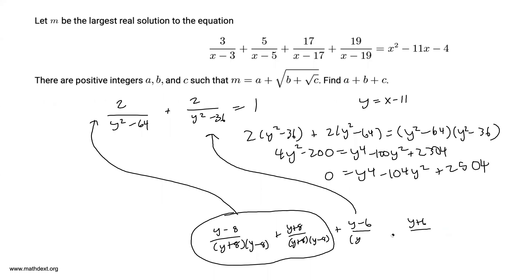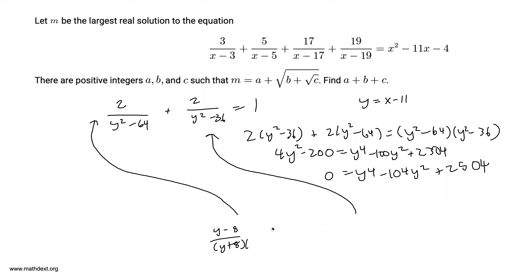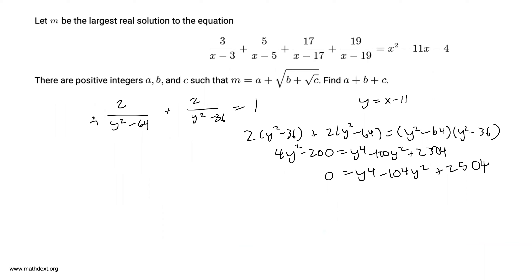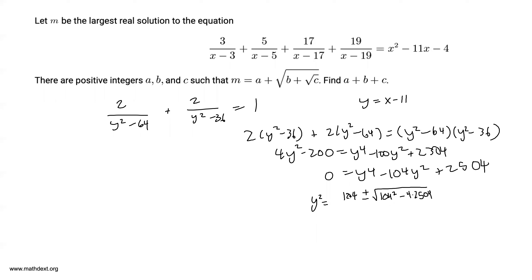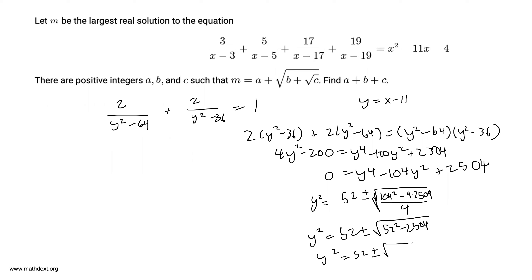Now we apply the quadratic formula since we have a quadratic in y². We get y² = [104 ± √(104² - 4·2504)] / 2. Simplifying: 104/2 = 52, and dividing the discriminant by 4 gives y² = 52 ± √200. Since y = x - 11 and y² = 52 ± √200, with 52² = 2704, this simplifies cleanly.